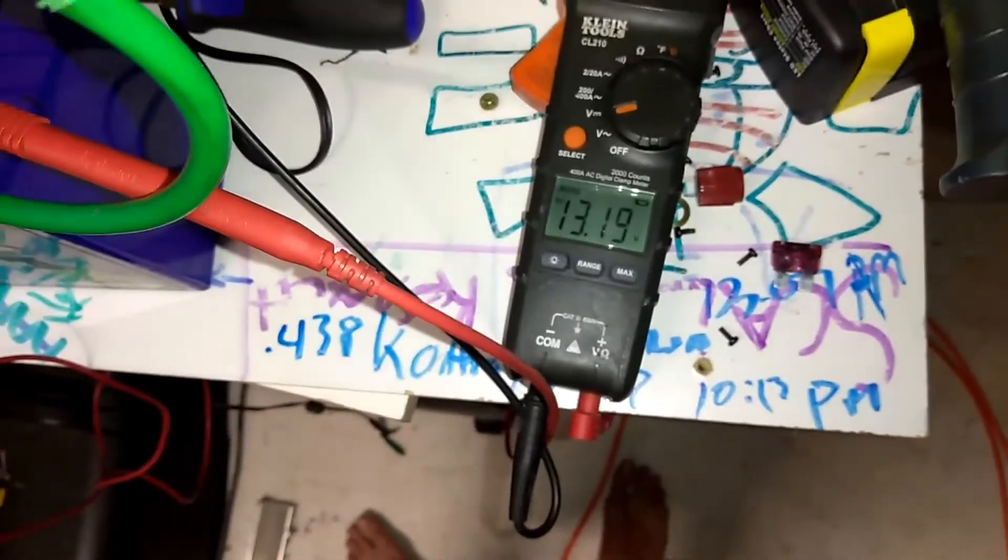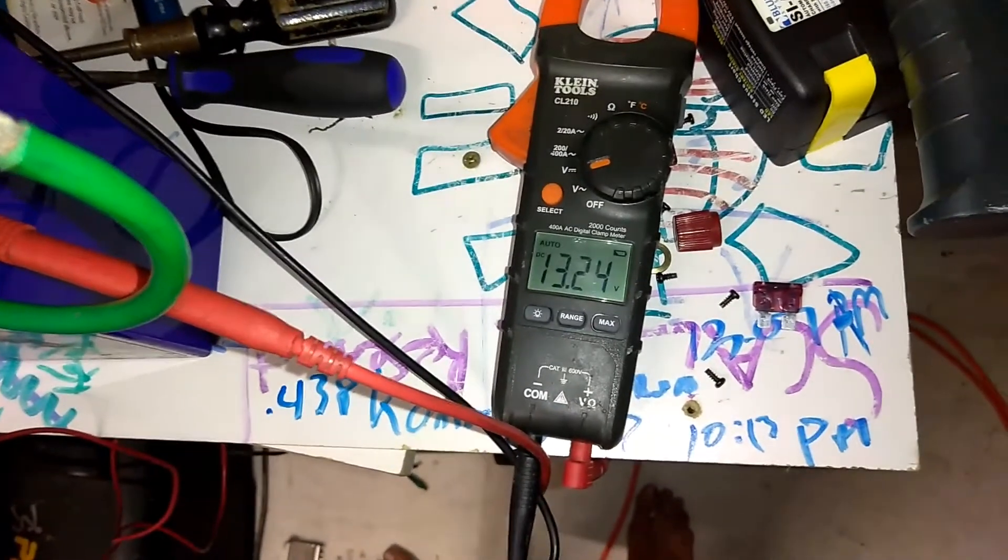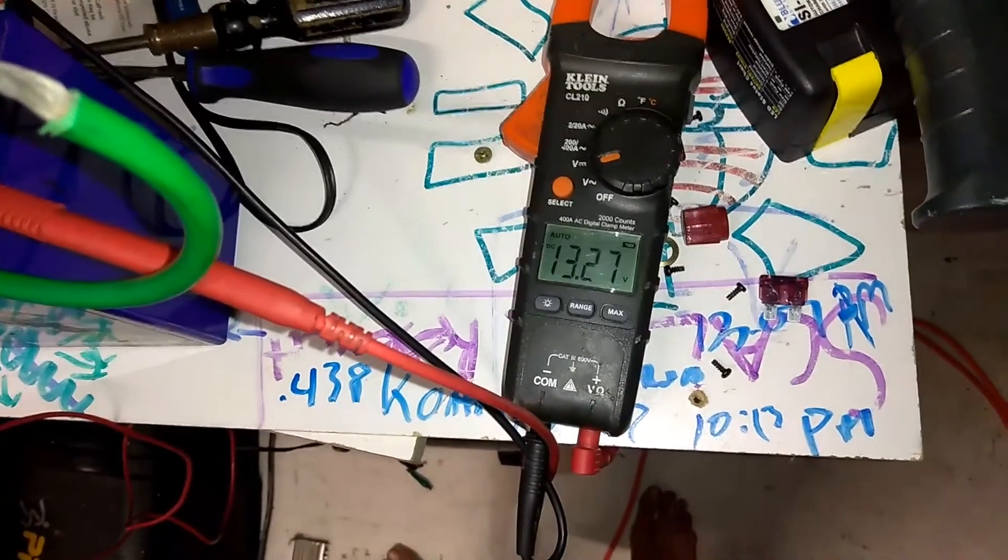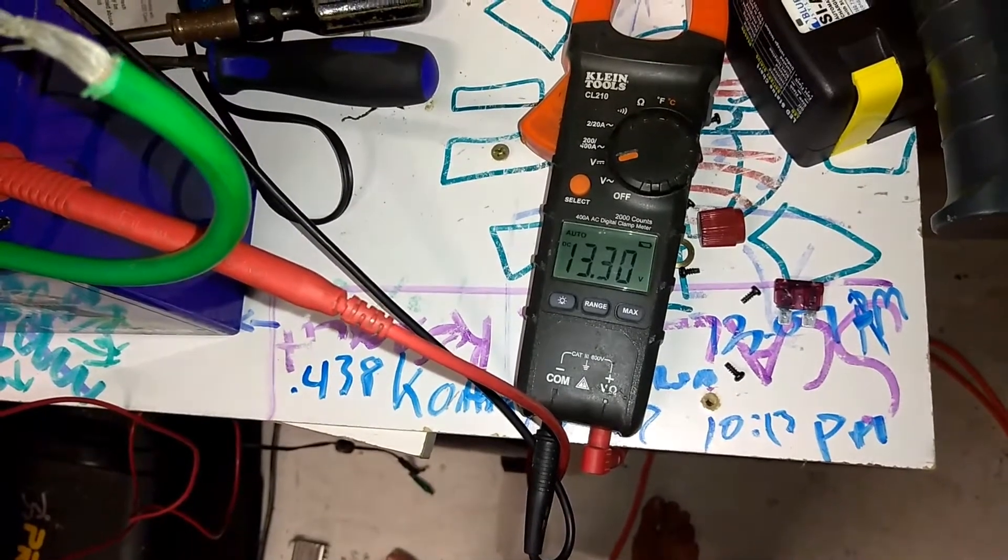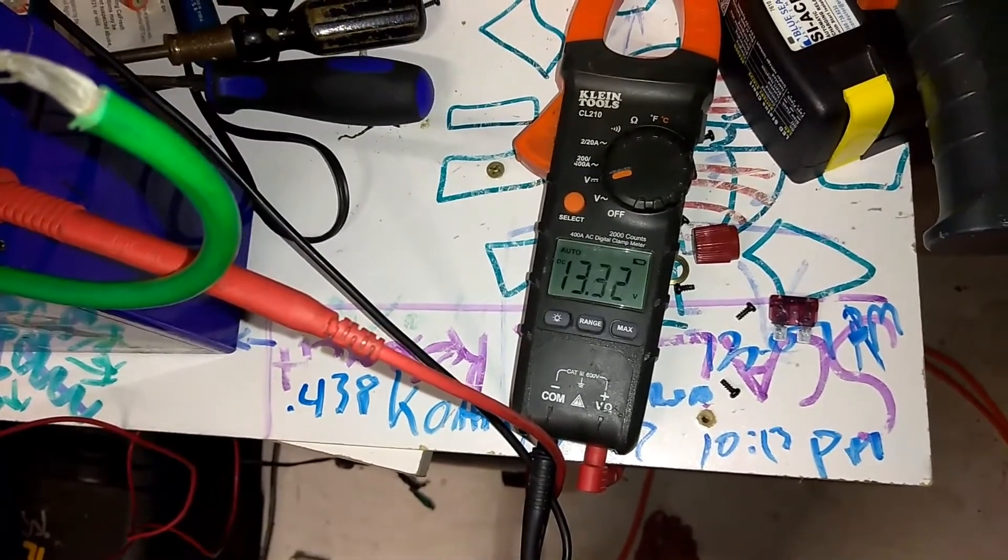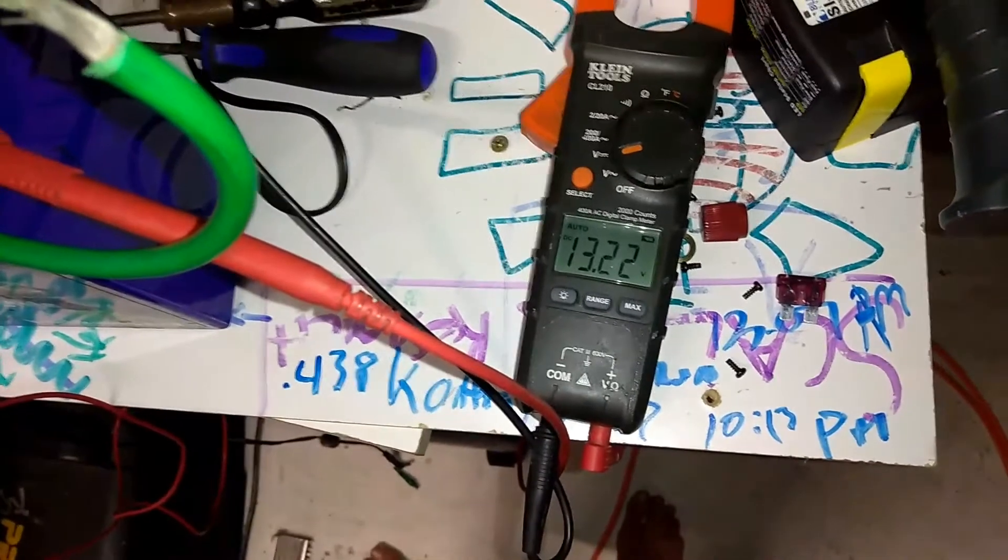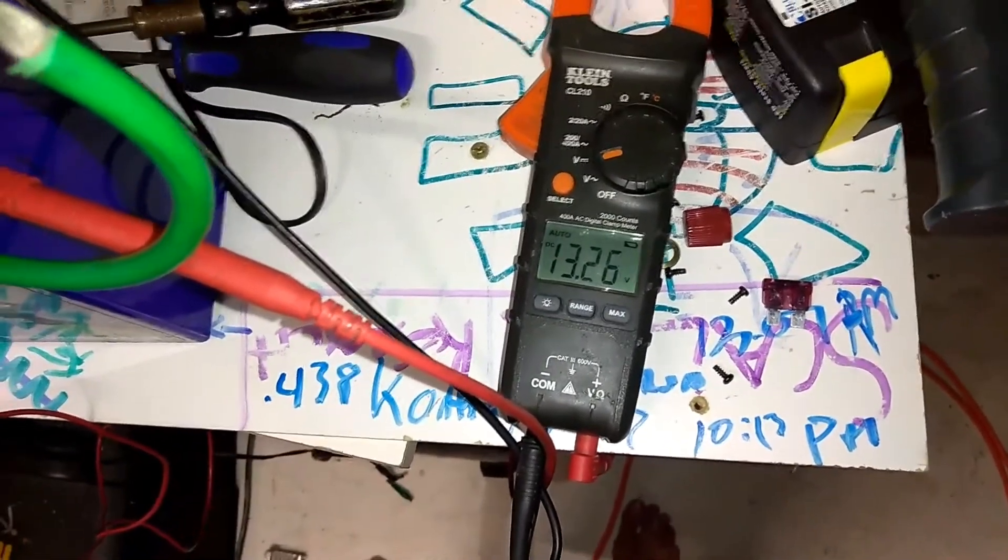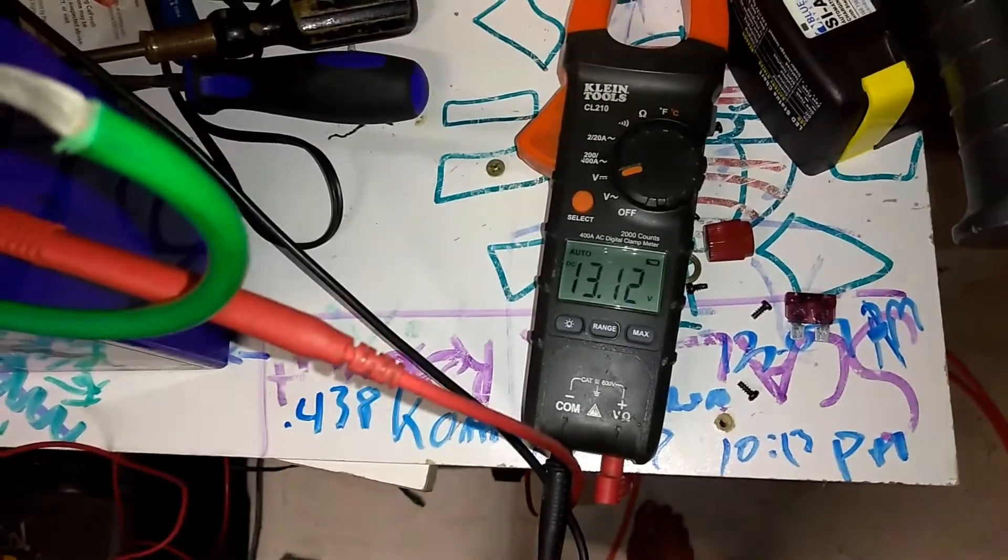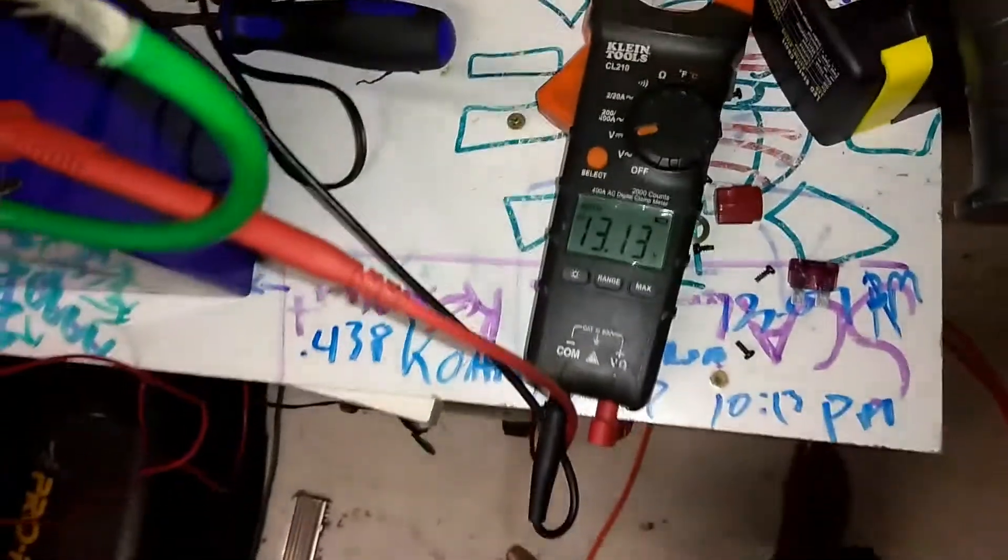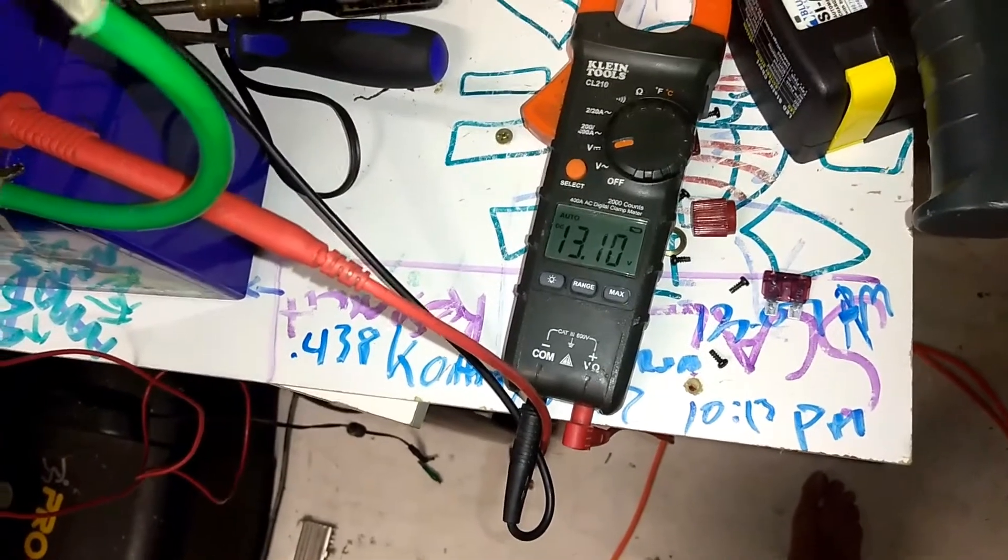So here we are. 13.19. 13.21. About an hour. And it went all the way up to 13.71 or 13.72. So there it is. It's back down to its voltage. It's kind of fluctuating back and forth.